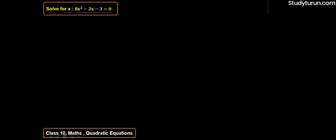It is a very simple question. There are many different ways you can use. We will split this question using the middle term method. The given quadratic equation is 8x² - 2x - 3 = 0.